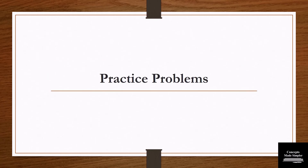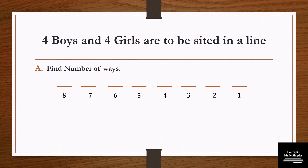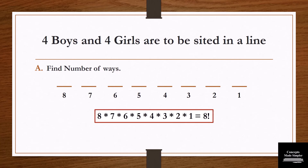Let's now practice a few questions. For this set of questions, 4 boys and 4 girls are to be seated in a line. Find the number of ways. Since there is no restriction, we use fundamental principles of counting. We have 8 placeholders: arranged in 8, 7, 6, 5, 4, 3, 2, 1 ways respectively. So the solution is 8 factorial.